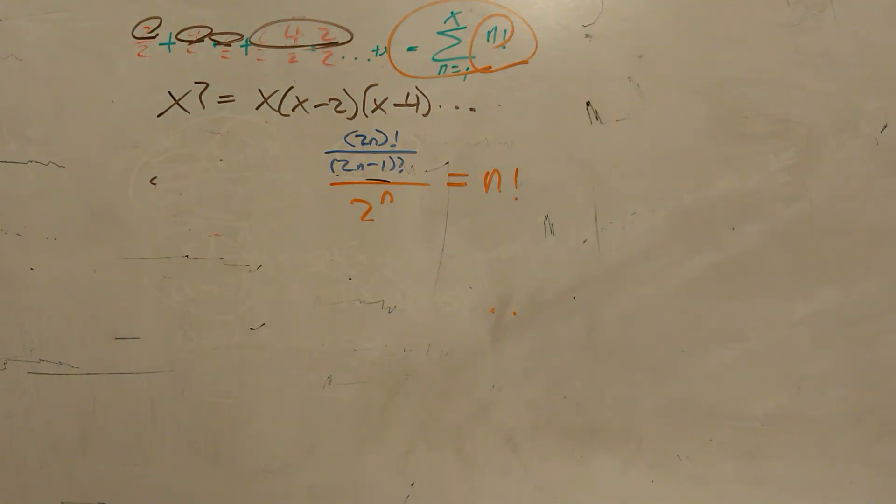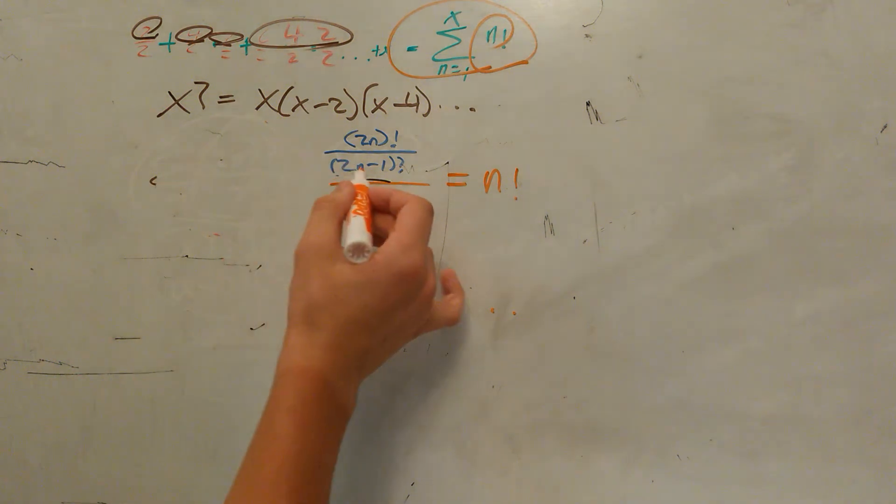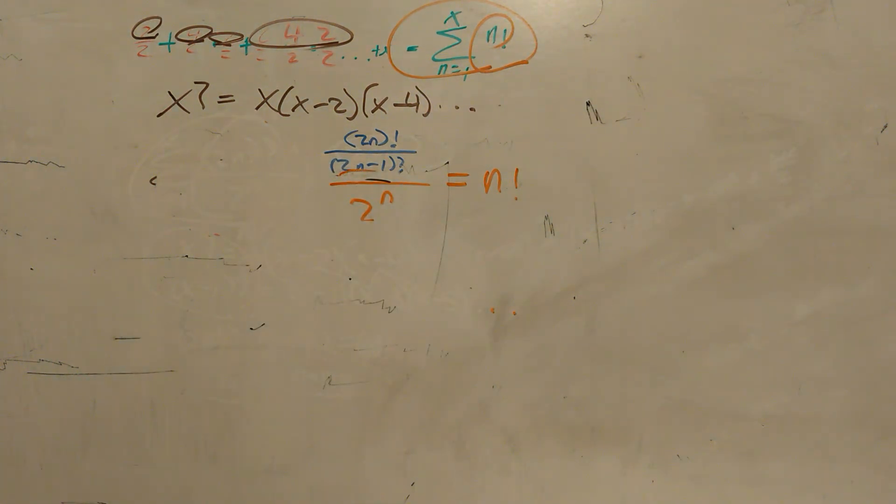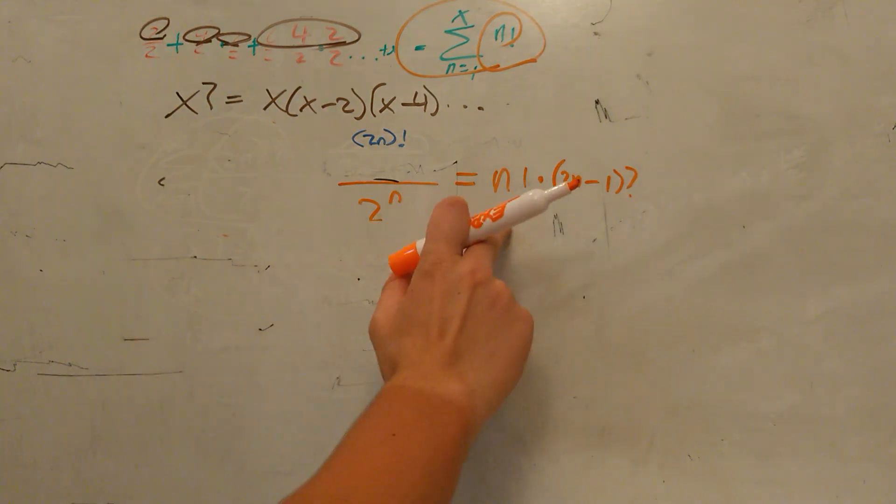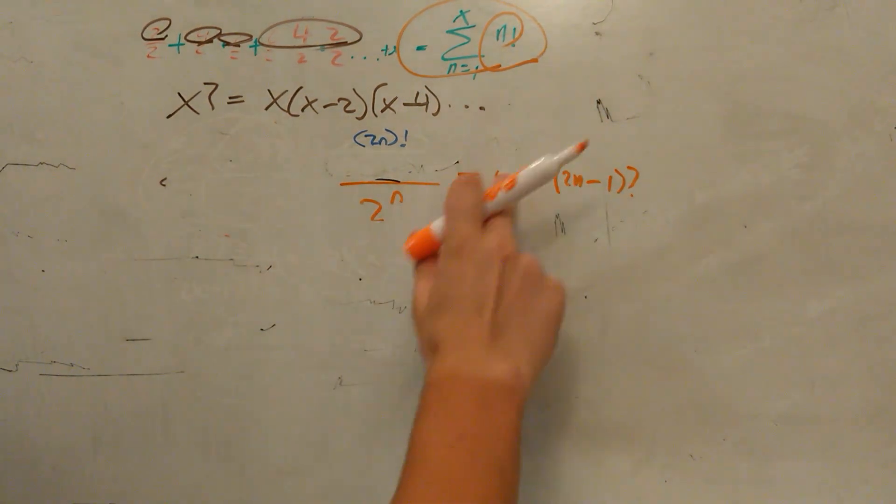We're solving for the product of odd numbers, and we'll notice that 2n minus 1 will always be odd if n is a whole number. We then obviously want to multiply both sides by this to get rid of it. Because you have a fraction over a fraction, we can just get rid of one of the bars. Then all we have to do is divide both sides by n factorial.